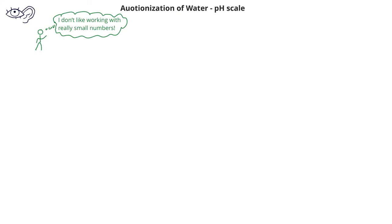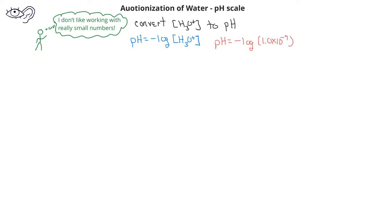You may have noticed that the concentrations of hydronium and hydroxide were very small numbers, on the order of 10 to the minus 6 or 10 to the minus 9 molar. Chemists don't like working with very small numbers, so they found a way to turn these small concentration values into more human-sized numbers to compare acidity. They do this by something called pH. The pH is found by taking the negative logarithm of the hydronium ion concentration. For a neutral solution with a hydronium ion concentration of 1 times 10 to the negative 7th, the pH is the negative log of 1 times 10 to the negative 7th, which gives a pH of 7.